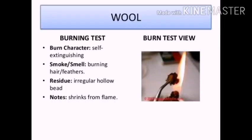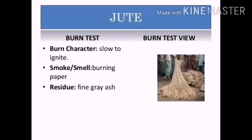Wool fibre curls while burning with a flame, giving out the smell of burning hair and leaving behind a ball of ash. Its burning character is self-extinguishing. It smells like hair or feathers, and wool shrinks from the flame. Jute: its burning character is slow to ignite with the smell of burning paper, and the residue is fine gray ash.